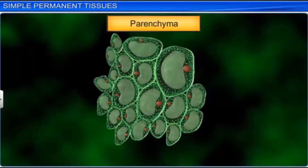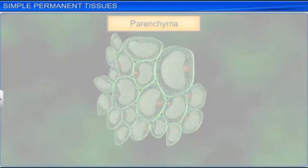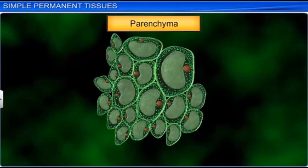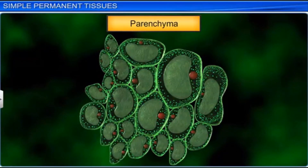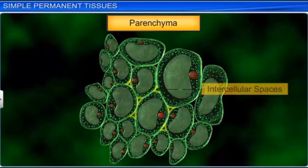Parenchyma is the most common ground tissue, performing functions such as photosynthesis, storage, and secretion. The cells of the parenchyma have the same dimensions — the same length, width, and height — which means they are isodiametric. Parenchyma cells are of different shapes such as sphere, oval, round, polygonal, or elongated. The cell walls are thin and made up of cellulose. Parenchymatic cells may be closely packed or have small intercellular spaces between them.